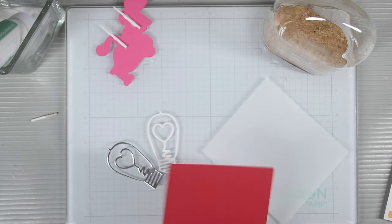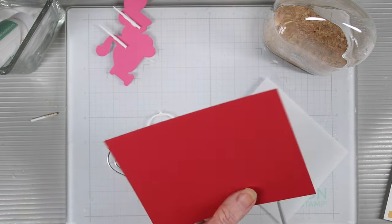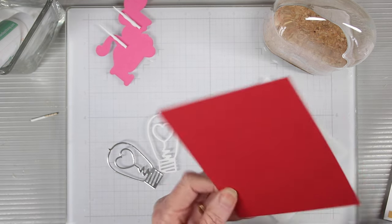I'm also going to cut just the heart only from some crimson cardstock. This is by Rainbow Splash, and I'm just going to cut a small square so that I can just cut that heart out by itself.